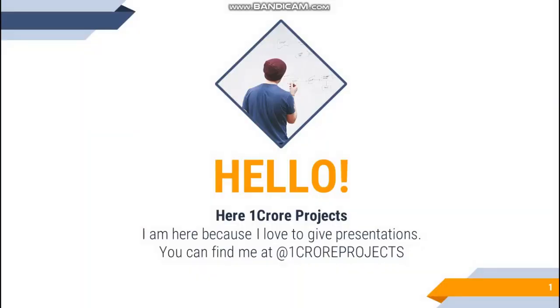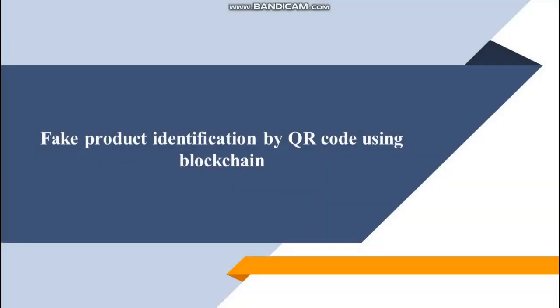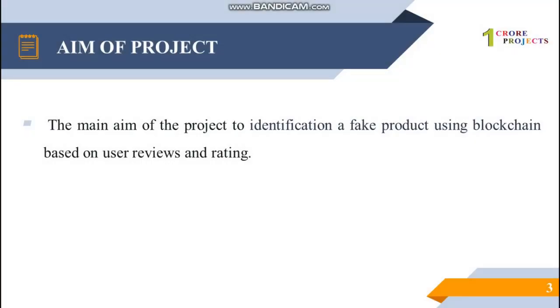Today we are going to see about the title: Fake Product Identification by QR Code Using Blockchain. The main aim of the project is to identify a fake product using a blockchain, based on user reviews and ratings.